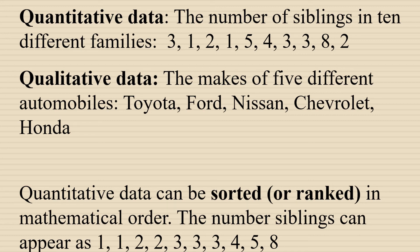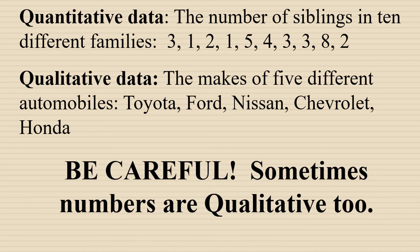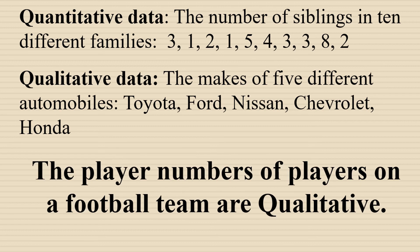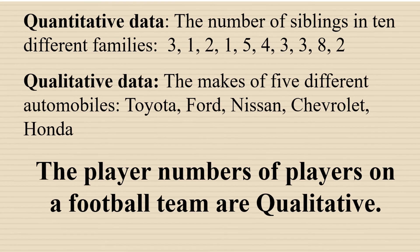For example, we could take the data about the number of siblings and rearrange it into the order 1, 1, 2, 2, 3, 3, 3, 4, 5, 8. We can also do other calculations with quantitative data. Be careful, because sometimes numbers can be qualitative data too. For example, the player numbers on a football team's jerseys are really just a way of identifying the player — they don't have any particular meaning in terms of value. Player number one is not less valuable than player number 10.